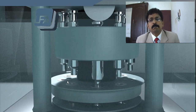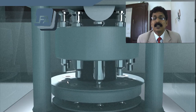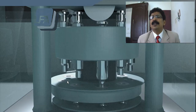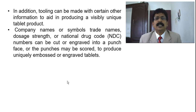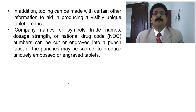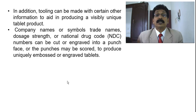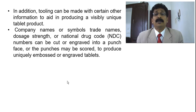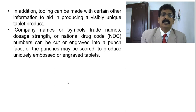Tooling is very important when studying a tablet machine. Many internet videos are available for students to refer to. Tooling can also carry additional information to aid in producing a visibly unique tablet: company names, symbols, trade names, dosage strength, or national drug codes can be cut or encoded on the punch face. Punches may also be scored to produce uniquely embossed or encoded tablets.